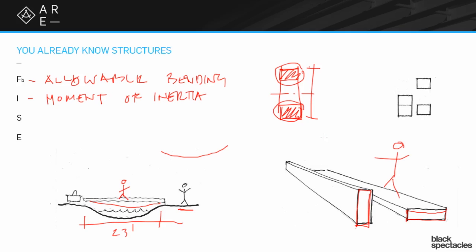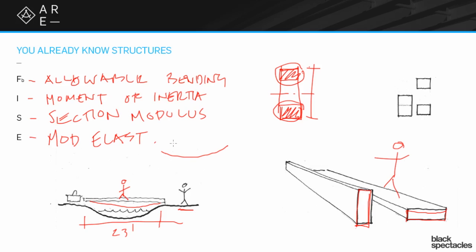The section modulus is another term that relates to the cross-sectional area of a spanning member — again, it's about shape and understanding that depth gives you better spanning capacity. Then there's E, the modulus of elasticity, which is not about shape but about the material itself. If you're using very fast-growth, weak wood — a weed-tree type wood — you'll have a much lower modulus of elasticity than if you were using Douglas fir or another structural species. Understanding the material itself also plays a role in how well this little bridge will work to get you to the picnic basket.